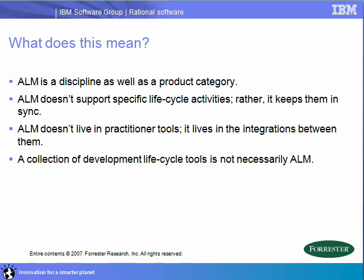So what exactly does this mean? It's a discipline, but it's also a product category. Teams practice the discipline of ALM to ensure that they have traceability, automation, and reporting across the various disciplines in the lifecycle. At the same time, it's a product category that vendors seek to provide solutions for. It doesn't really support specific lifecycle activities, but rather it focuses on keeping them in sync.